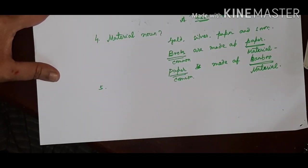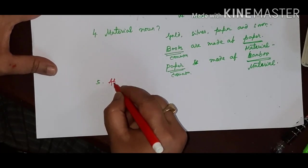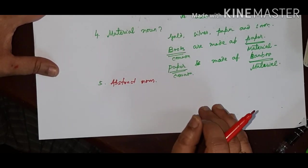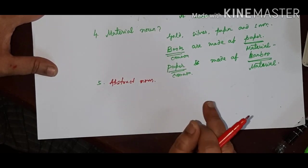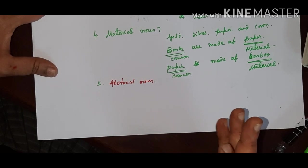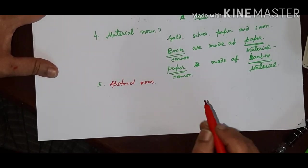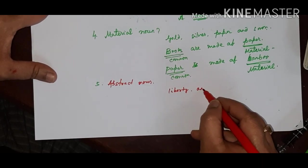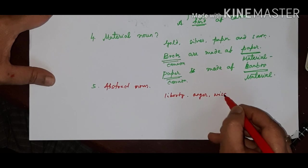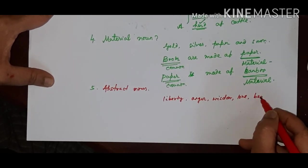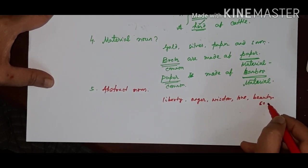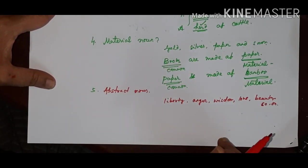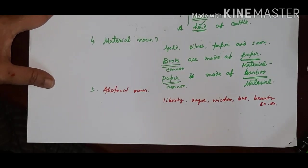The last one is the abstract noun. What is abstract noun, children? An abstract noun names a quality or an idea. Abstract nouns are those nouns which cannot be physically touched or seen. But, we can feel it. Some examples like we can say liberty, anger, wisdom, love, beauty, so on. Remember, children and notice it that this noun expresses ideas and qualities that cannot be seen or cannot be touched.